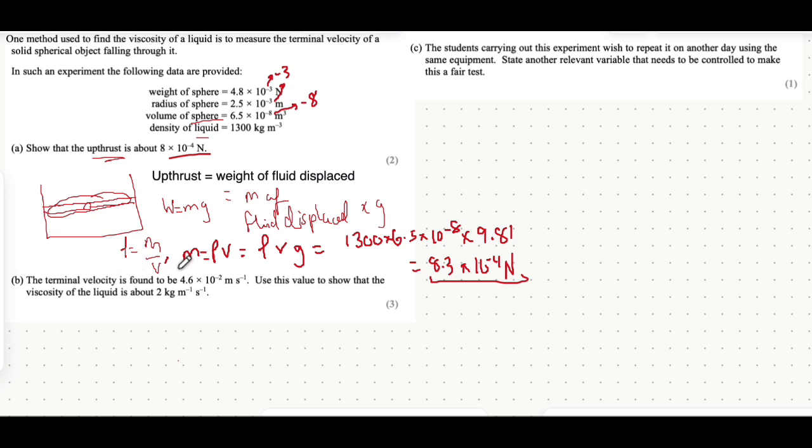The terminal velocity is found to be 4.6 times 10 to the minus 2 meters per second. Use this value to show the viscosity of the liquid is about that value. Let's break down all the forces acting on this ball as it enters the fluid. There's the weight of the sphere, the upthrust which acts against it, and the viscous drag force.